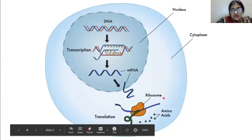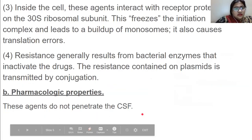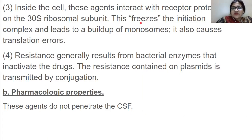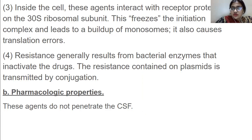These agents interact with receptor proteins on the 30S ribosomal subunit, which freezes the initiation complex, leads to buildup of monosomes, and causes translation errors. Resistance generally results from bacterial enzymes that inactivate the drugs. The resistance contained on a plasmid is transmitted by conjugation — two bacteria come close to each other and the plasmid is transferred from one to another carrying the message of antibiotic resistance. Pharmacological properties: these agents do not penetrate the CSF.